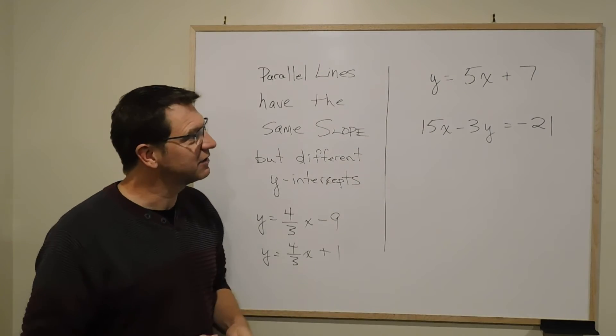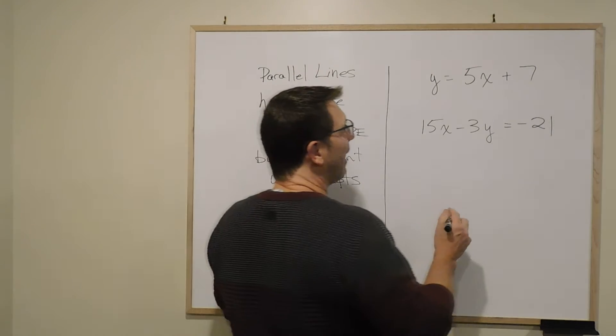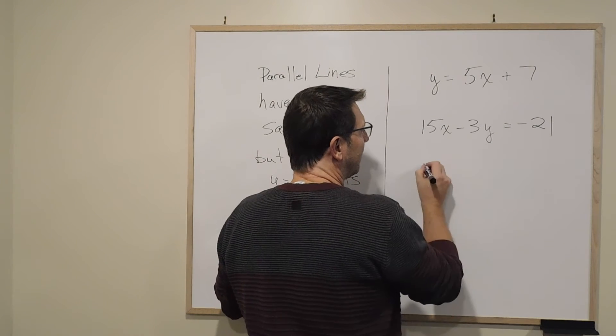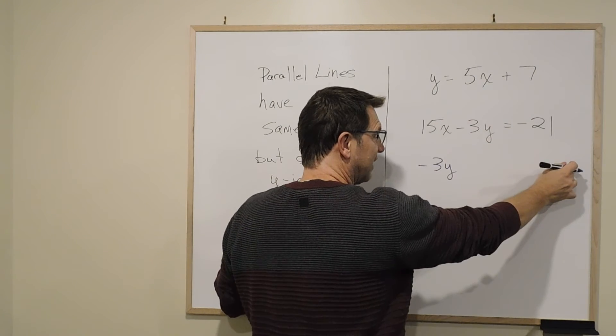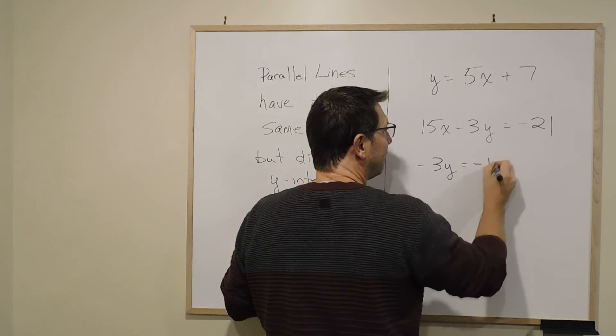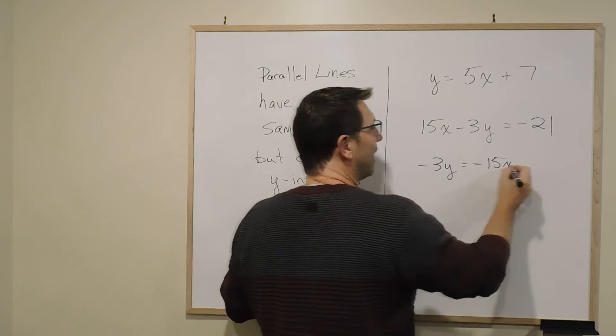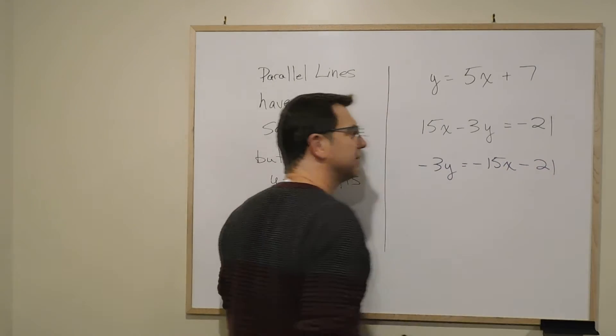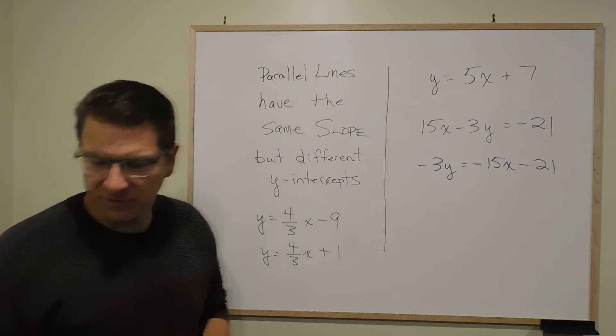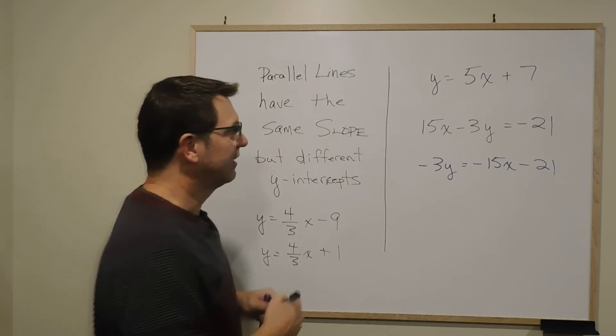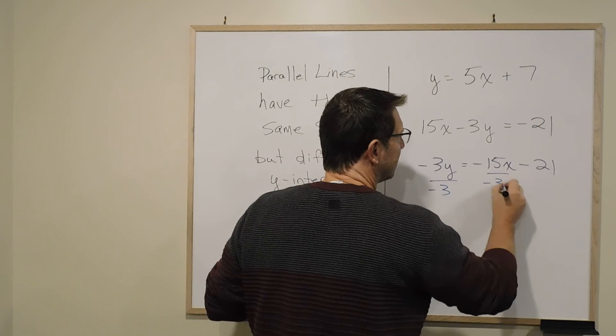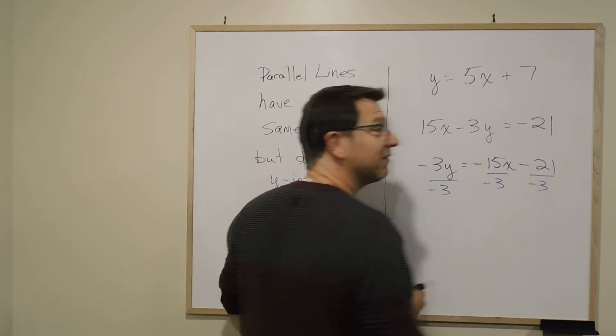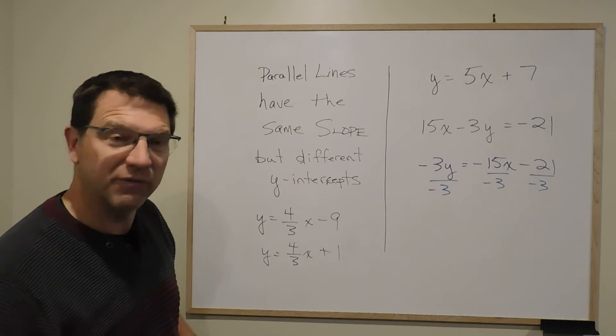But what you find is when you look at this second one here, I take -3y and leave it here but move the 15x to the other side. I have -15x and I have -21. Now what I want to do is divide by -3 to get y by itself. So I have to divide everything by -3. That's a rule we've looked at before.